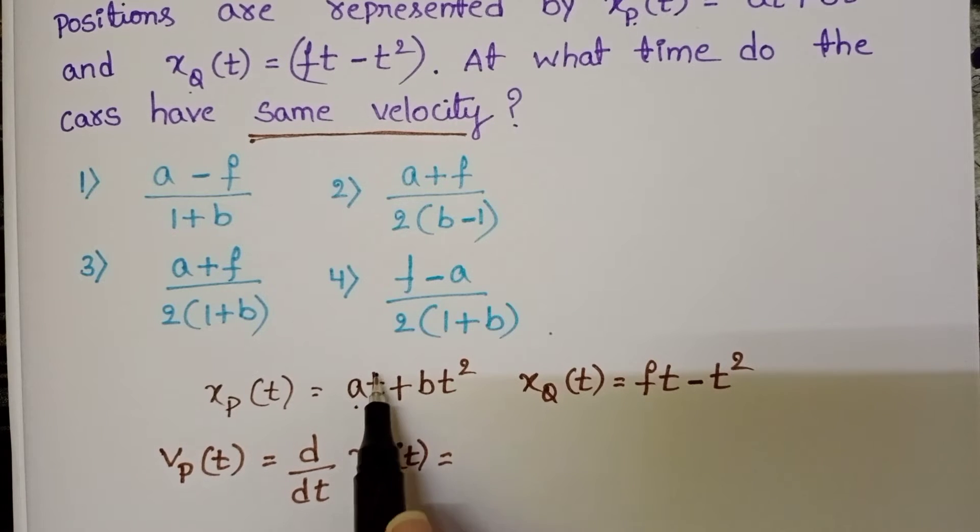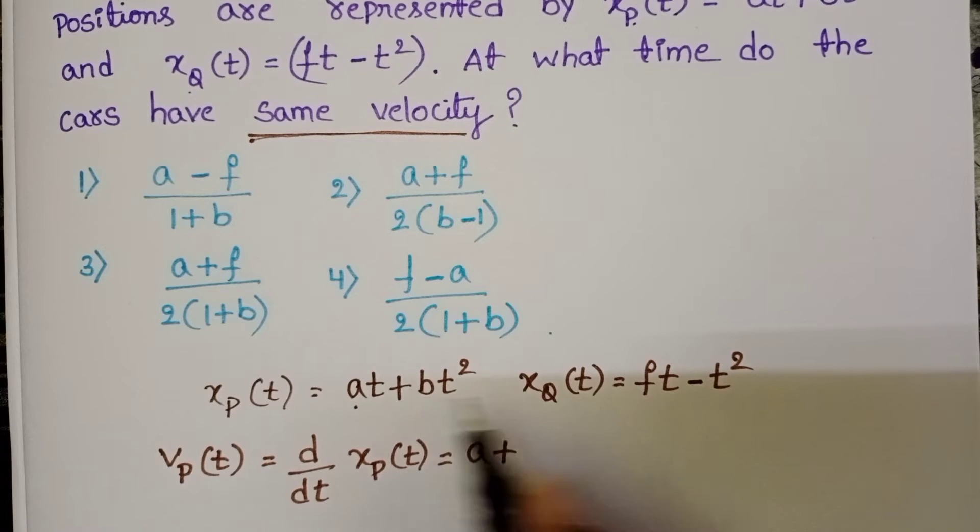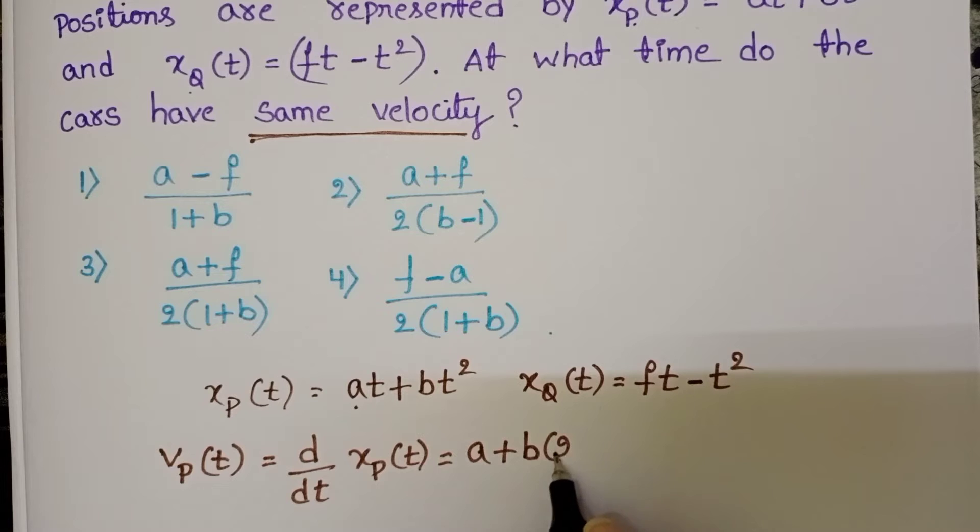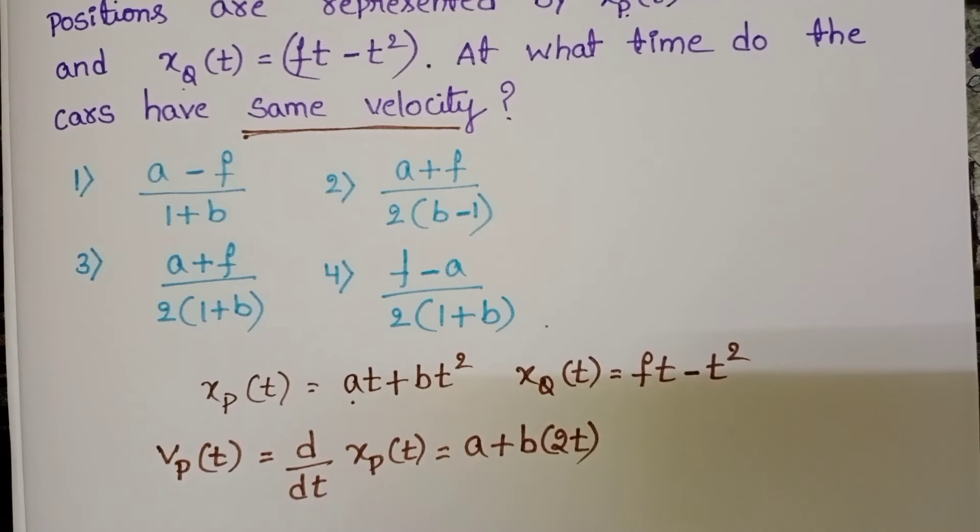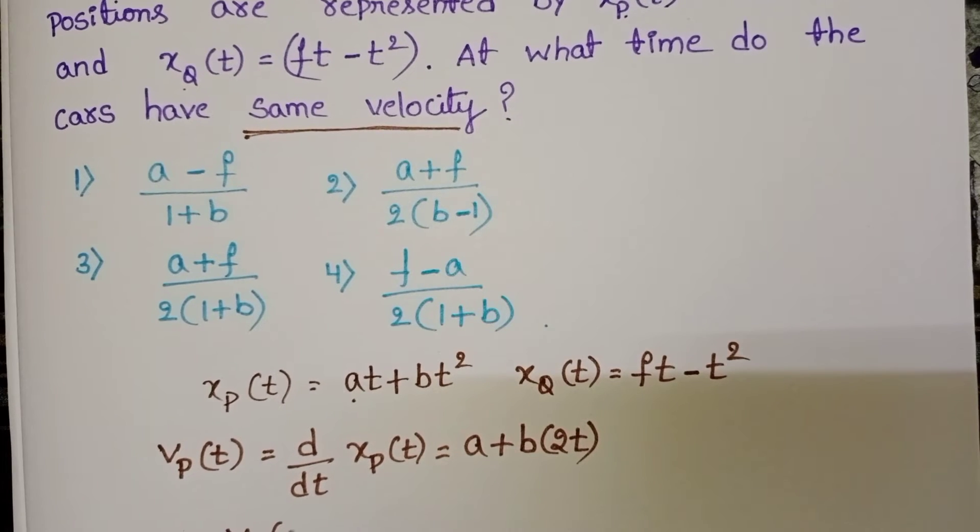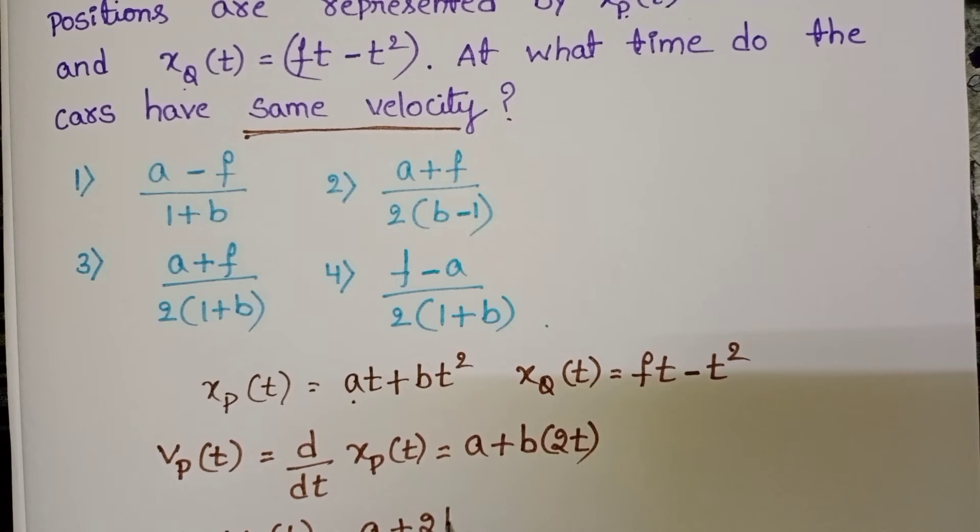Here a is constant, dt/dt is 1. So a plus b constant, d/dt of t² becomes 2t. So velocity of car P equals a + 2bt.